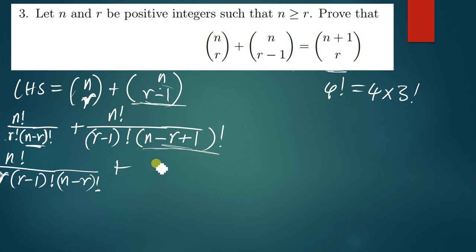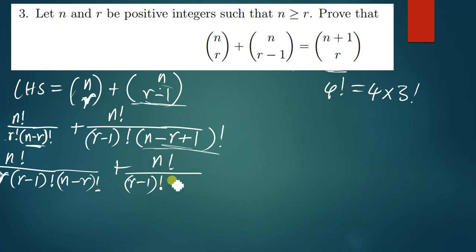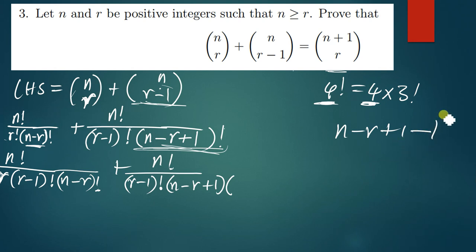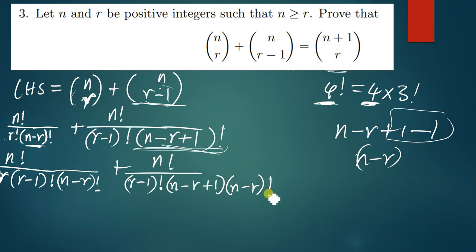Finding that factorial: on top we have n factorial, the denominator is r minus one factorial, and then we start with the same expression. The same way that if you have four factorial you start with the same four — so if we have this factorial we start with this same one. Then we subtract one from the whole expression. If we subtract one from n minus r plus one, we get n minus r. Then we put a factorial there.